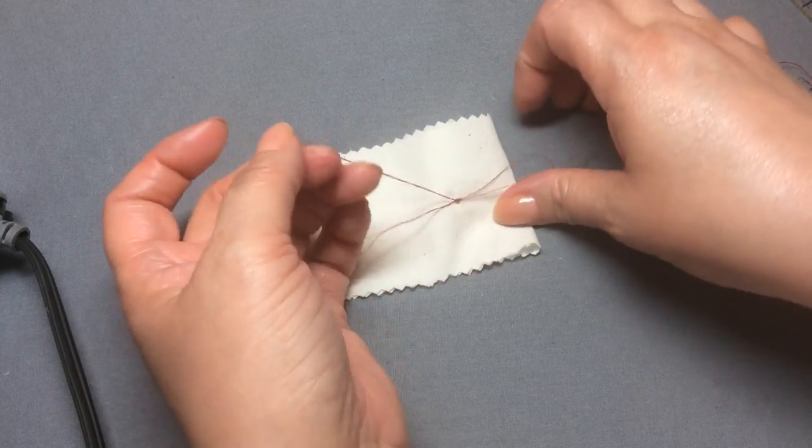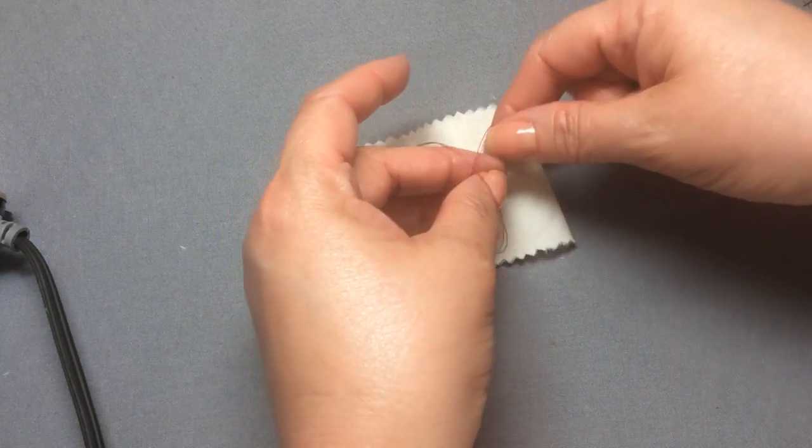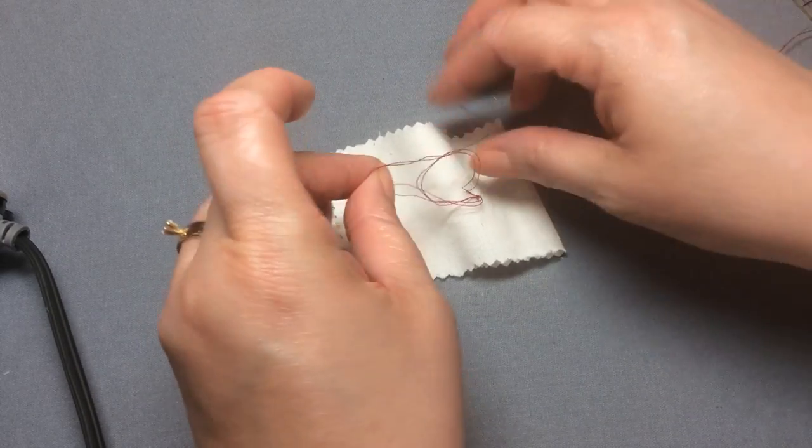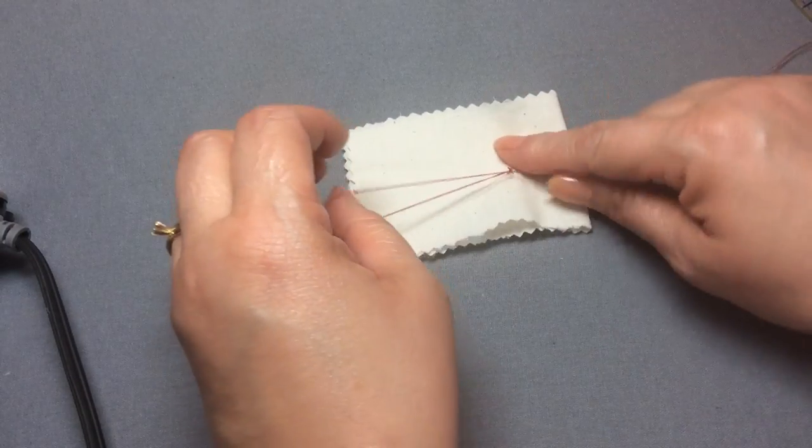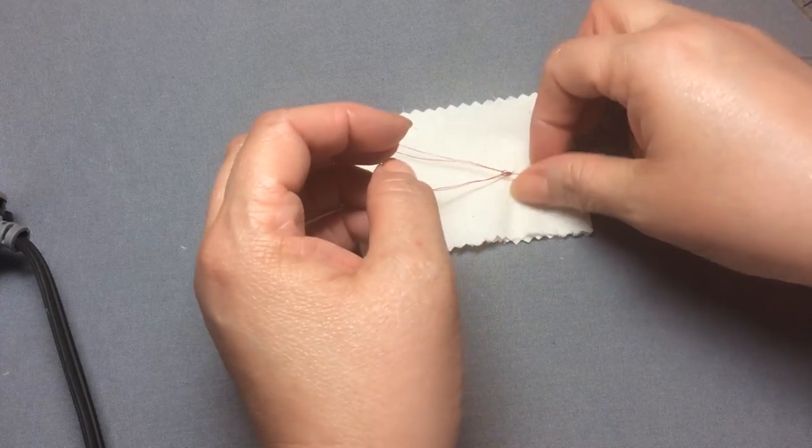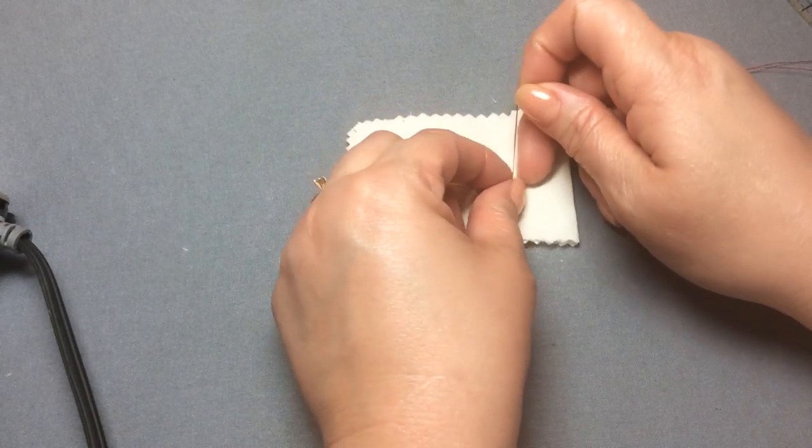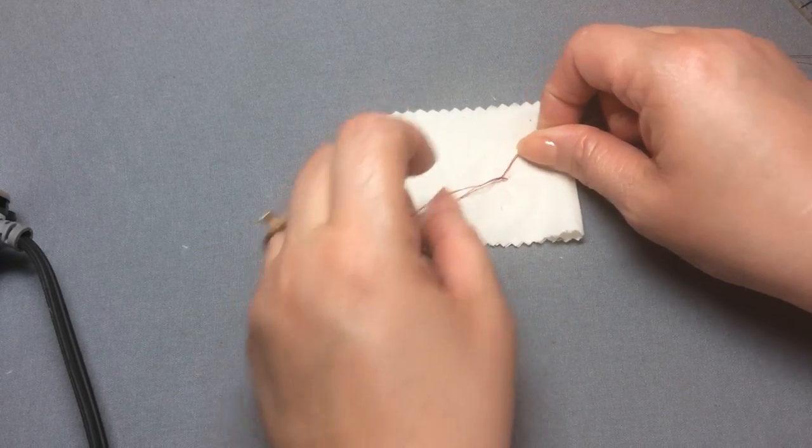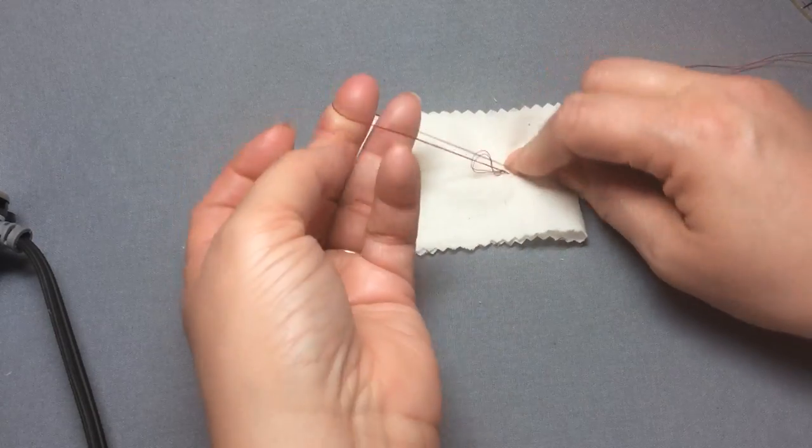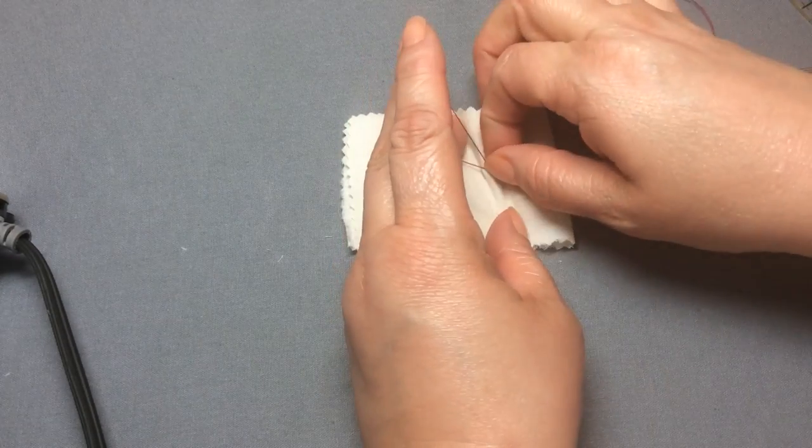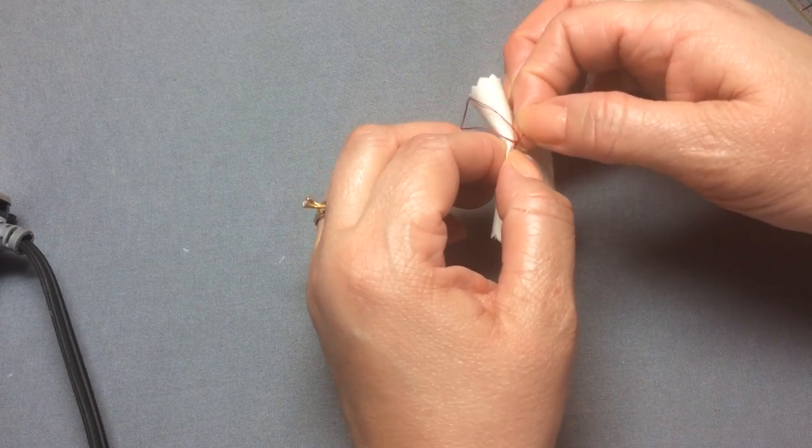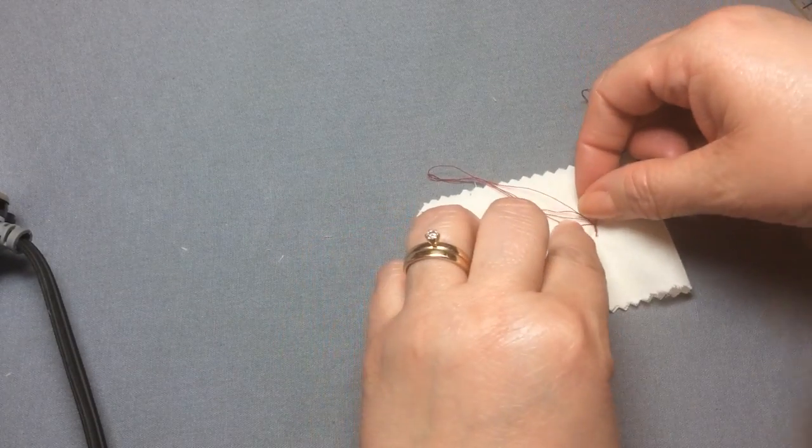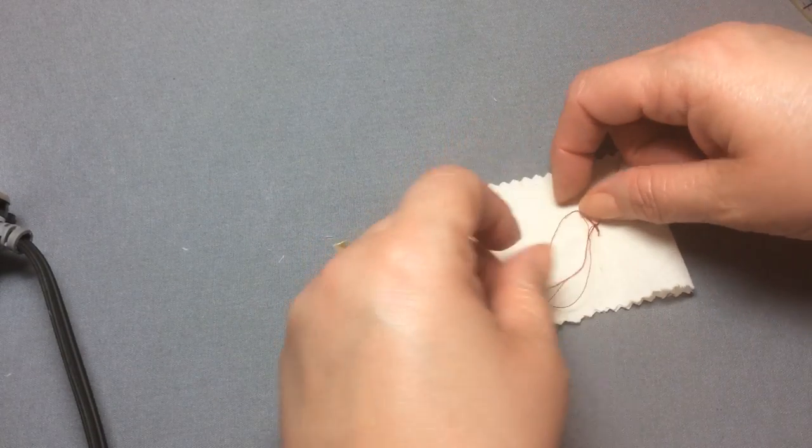I just continue doing that. I continue pulling my thread through. Notice I'm not letting the needle come through, I'm just holding on to it. I continue to make these chains until I get about an inch and a half. My thread is knotting, so if it knots you just have to work it. Then continue to pull the thread through.